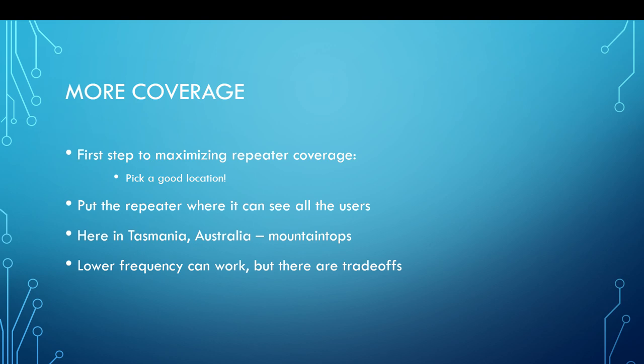Two meters is 10 dB better than 70 centimetres UHF; 6 meters is 20 dB better than UHF - so 100 times better. Six meters refracts and bends around mountains better than UHF. But there are trade-offs: antennas get bigger, site restrictions apply, and cavity filters can be huge at lower frequencies.